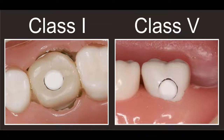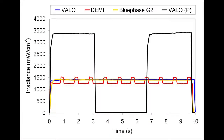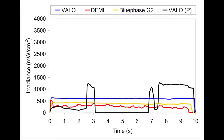Here we can see the location of the sensors described in the article. The sensor in the Class I location was 4 millimeters from the cusp tip, and in the Class V location the sensor was 2 millimeters from the facial surface. One operator used the curing light to its maximum potential, delivering a very uniform irradiance in the Class V location. Another operator was less steady, delivering a non-uniform and low amount of irradiance to the Class V detector.